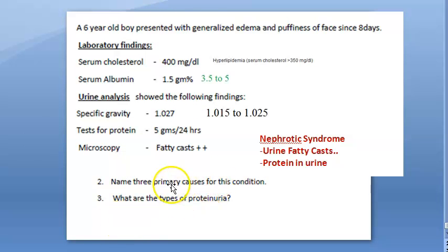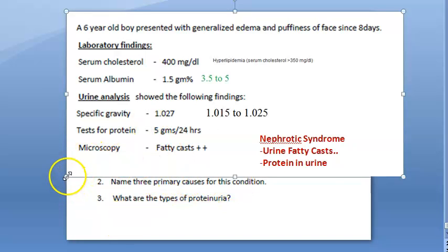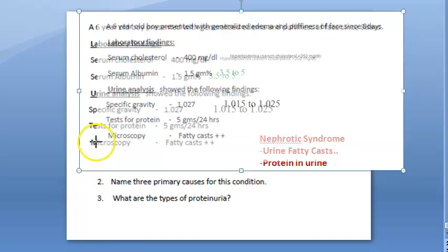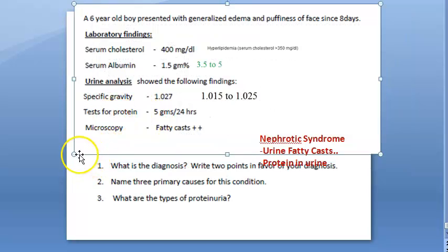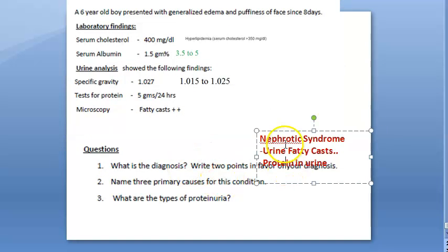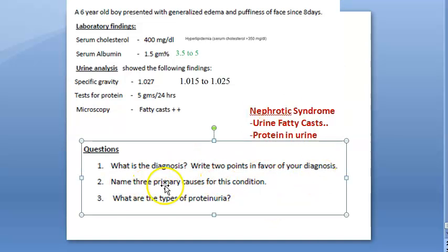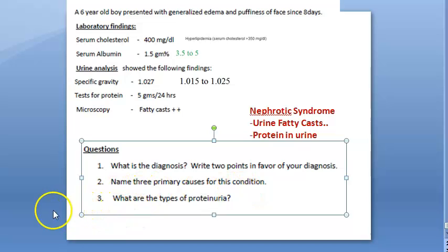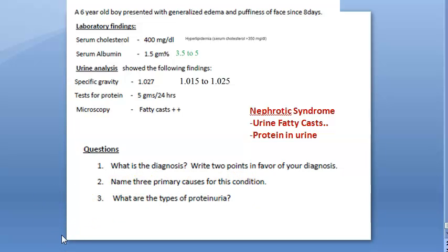What are the primary causes for this condition? The questions are: what is the diagnosis, two points in favor of your diagnosis, name three primary causes for this condition, and what are the types of proteinuria? For nephrotic syndrome, what are the causes?